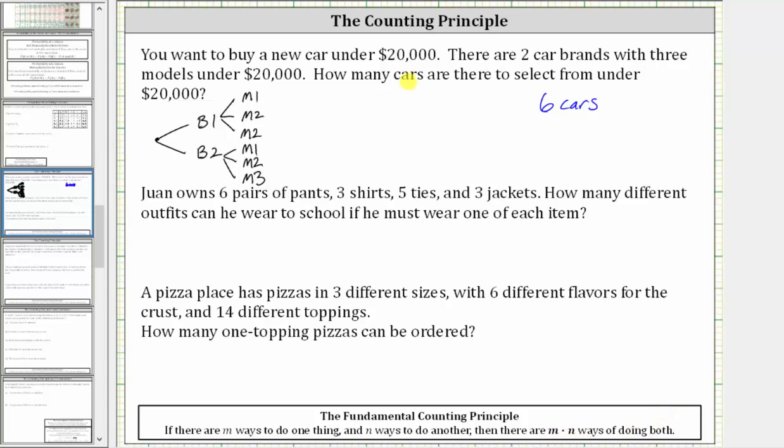So in our case, you must select the brand and then select the model. And since there are two ways to select the brand and three ways to select the model, two times three is equal to six, giving us a total of six cars to select from under $20,000.